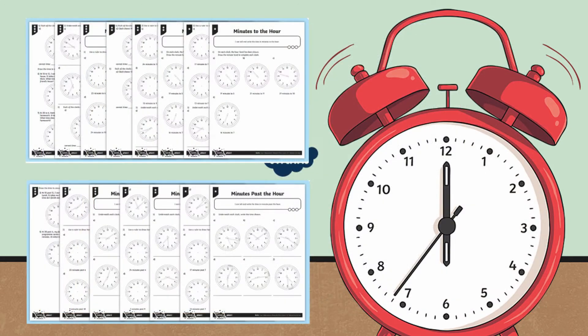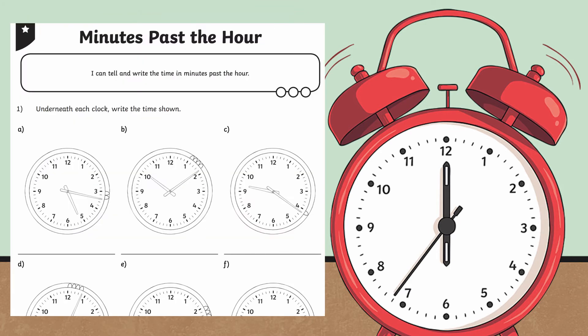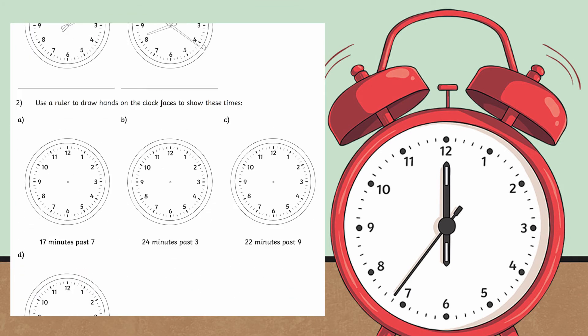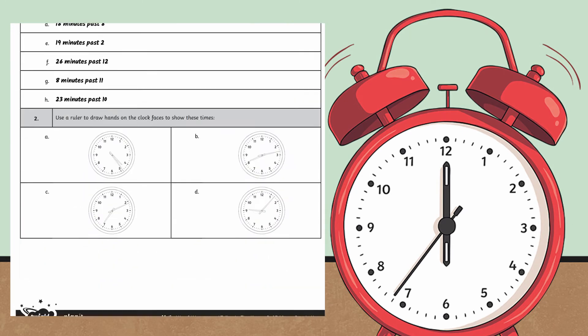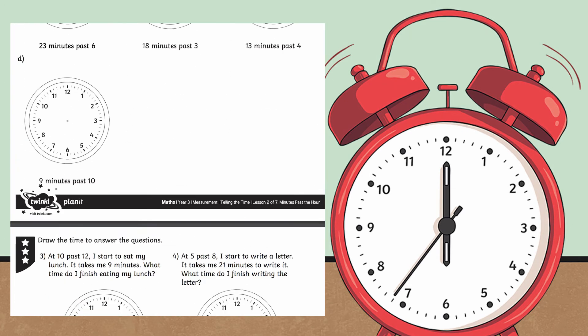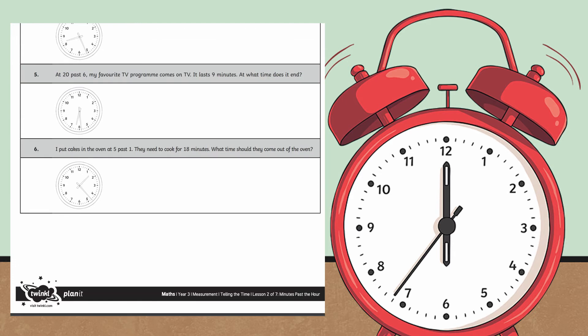Get children reading the analog clock with these differentiated worksheets on minutes past the hour and minutes to the hour. These worksheets are a great way to help children develop their understanding of how to tell the time on an analog clock in minute intervals past and to the hour.